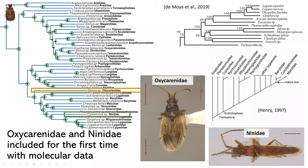We found Oxychirinidae and Nenidae — we included them for the first time with molecular data — and you can see their placement here within Pentatomomorpha, which is exciting.